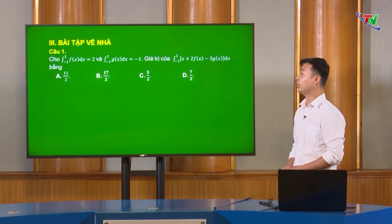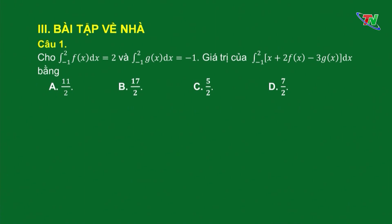Thầy đưa ra 3 câu hỏi. Câu hỏi thứ nhất, cho tích phân từ âm 1 đến 2 của f(x) bằng 2, tích phân từ âm 1 đến 2 của g(x) bằng âm 1. Hỏi giá trị của tích phân từ âm 1 đến 2 của [x + 2f(x) - 3g(x)] bằng phương án A: 11/2; B: 17/2; C: 5/2; D: 7/2. Gợi ý: câu hỏi này các em hãy sử dụng tính chất của tích phân, chuyển về tổng hiệu của 3 tích phân, rồi tính từng tích phân cụ thể.